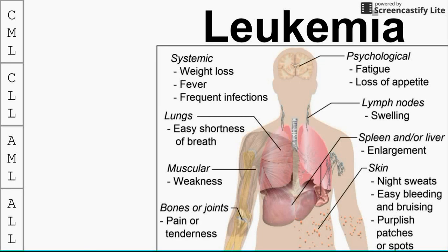This is a short overview of the four main leukemias that are important to know. Leukemias affect all parts of the body, mainly because blood is taken all over the body, and leukemia is a cancer of the blood. We see stomach, lung, muscular, bones, joints, lymph nodes, spleen — symptoms all over.